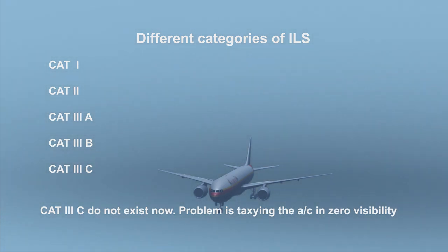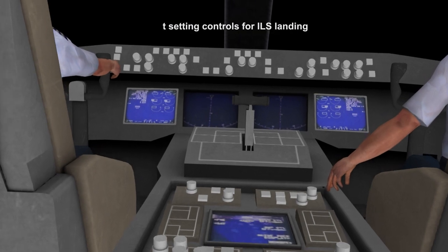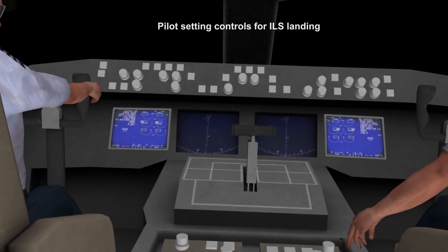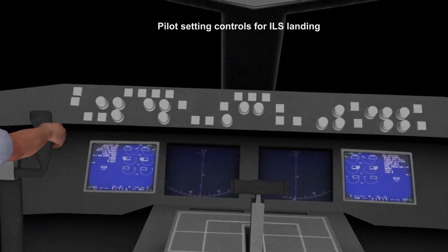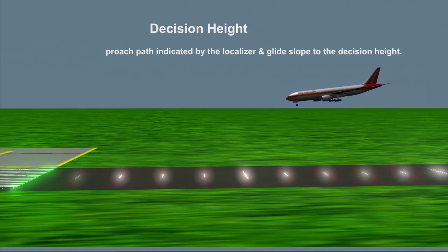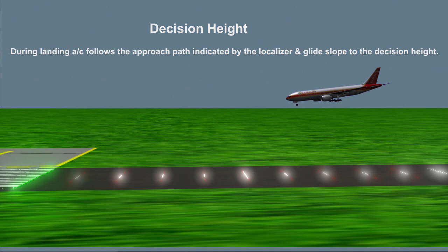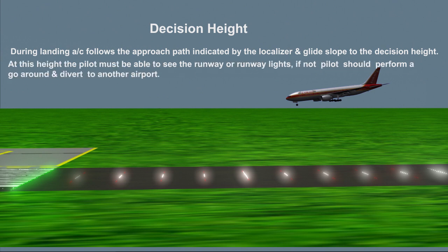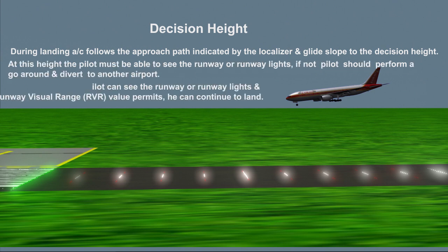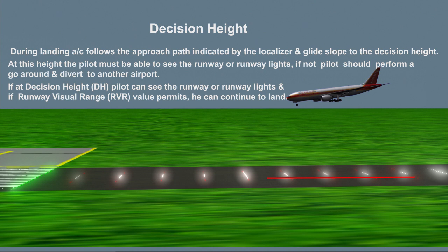Category 3C does not exist now. Decision height is an important factor during ILS landing. During landing, the aircraft follows the approach path indicated by the localizer and the glide slope to the decision height.